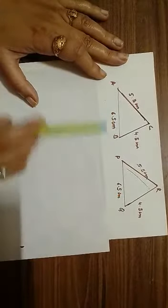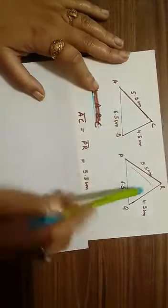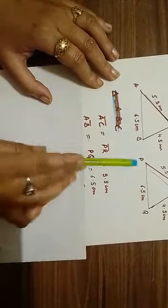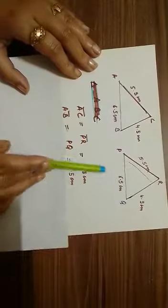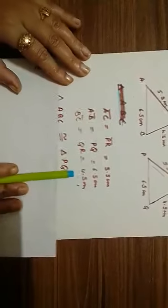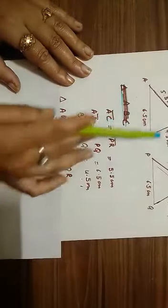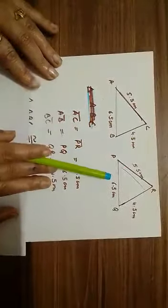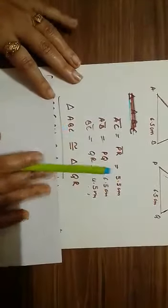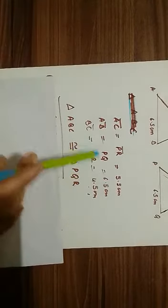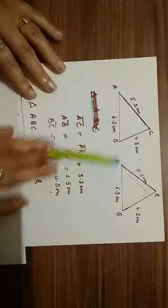ABC and PQR. Here, side AC equals PR, that is 5.5 centimeters, AB equals PQ, that is 6.5 centimeters, and BC equals RQ, that is 4.5 centimeters. So all three sides of these two triangles are equal. We can say triangle ABC is congruent to triangle PQR, and these two triangles fulfill the SSS congruence condition.